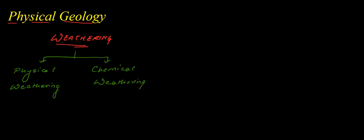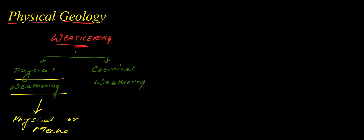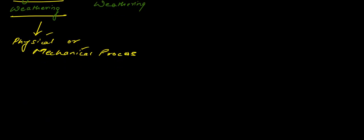By the name Physical Weathering, you can say that physically we break the rocks and minerals into small fragments. This process is done by a physical or mechanical process. In Physical Weathering, the rocks and minerals are disintegrated physically or mechanically, and we get small fragments of rocks which we can define in three different sizes.